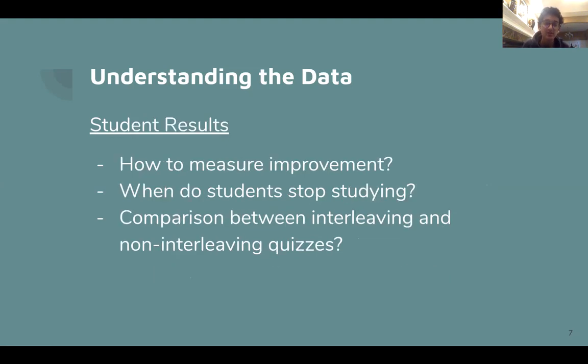The second aspect is understanding student results. So I wanted to answer questions like how do I measure student improvement? When do students stop studying a specific concept? And also comparing between interleaving and not interleaving. This is basically when a student has multiple concepts in a single quiz. That's when a student is using interleaving. When a student is not using interleaving, it's when there's only one concept on the quiz.